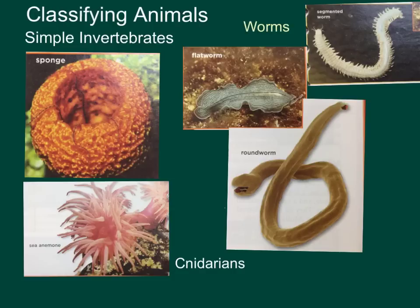Now we talk about worms. There are three groups of worms: your flatworms, your roundworms, and your segmented worms, which are your earthworms, your leeches, stuff like that. All worms have bilateral symmetry.